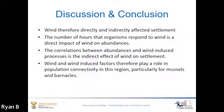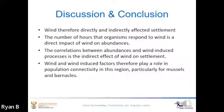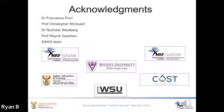This presumes that abundances increased with upwelling as it brings more nutrients, whilst the negative relationship between turbulence and abundances suggests that organisms preferred calmer waters, which would increase settlement chances. Wind therefore directly and indirectly affected settlement: the number of hours showed a direct impact of wind, and the wind-driven processes showed the indirect effect on settlement. Wind and wind-induced factors do play an important role in population connectivity in this region, particularly for mussels and barnacles. Thank you very much.